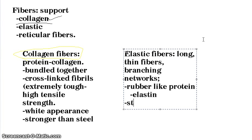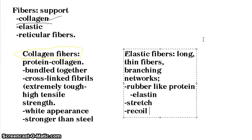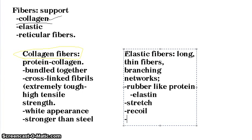Because of elastin's rubber-like properties, elastic fibers have the ability to stretch and to recoil. The connective tissue can stretch only so much before its thick rope-like collagen fibers become taut. Then when the tension lets up, elastic fibers snap the connective tissue back to its normal length and shape.